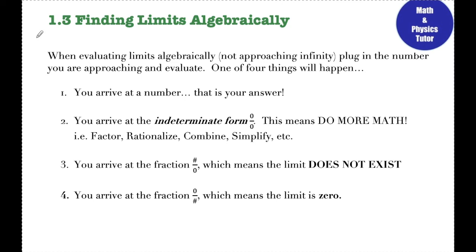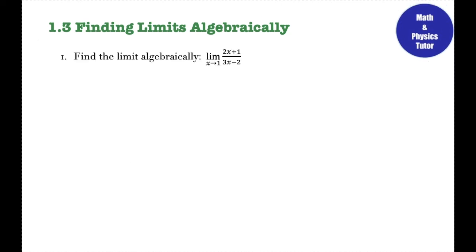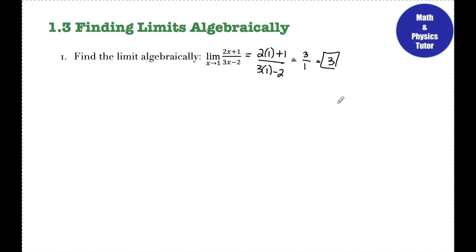Let's look at a couple of examples with each of those scenarios. Number 1: the limit as x approaches 1 of (2x + 1) over (3x − 2). The first thing I'm always going to do is plug in the number I'm approaching. So I have 2 times 1 plus 1 over 3 times 1 minus 2. In my numerator I get 3, in the denominator I get 1, so my answer is just 3.